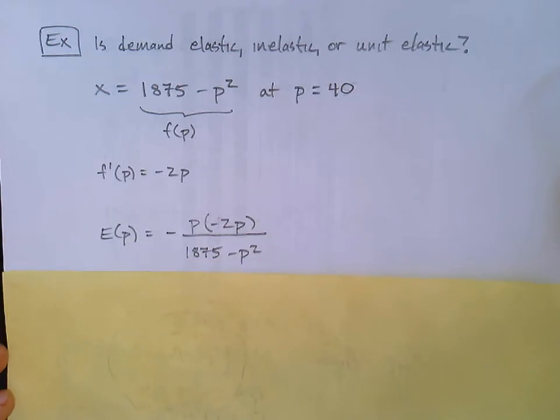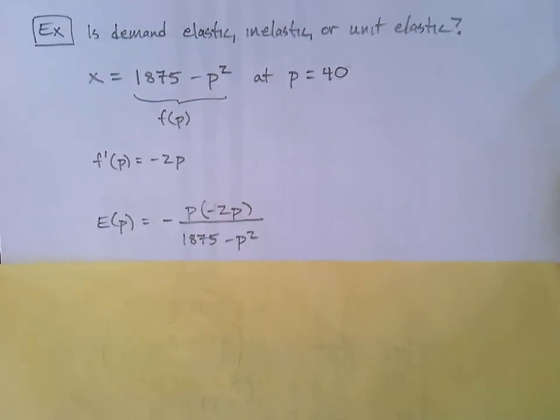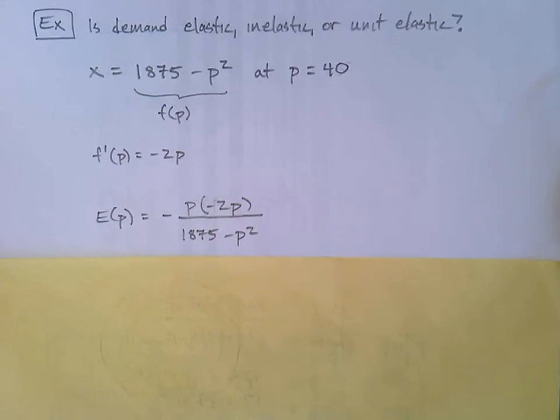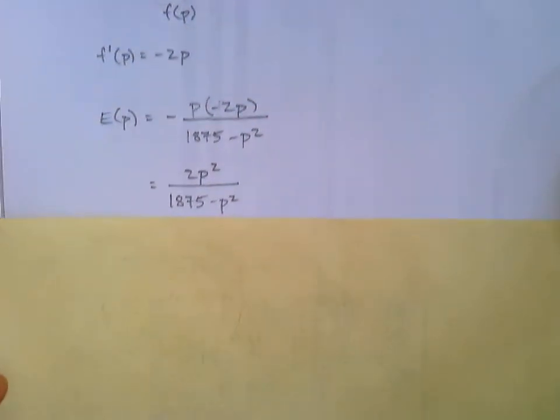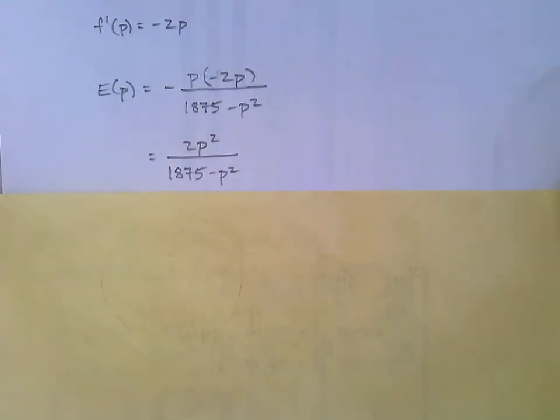Let's put it all together. E of p, elasticity of demand, equals negative p times f prime p over f of p. So negative p times negative 2p all over 1875 minus p squared. Let's simplify that. Those negatives cancel out nicely, and we have 2p squared over 1875 minus p squared.